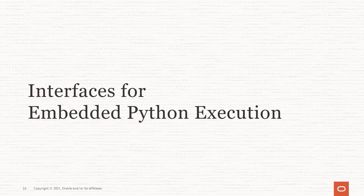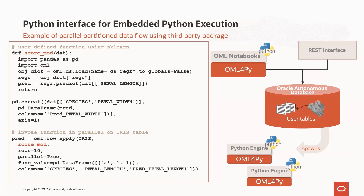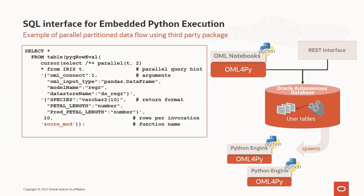Here in the Python interface, we're using row apply to score a model on the iris table. Model mod was created in Python, saved to data store dsmod, and now we're loading the model in the scoring function score_mod and scoring it on the iris table 10 rows at a time, returning results in a single table. The equivalent SQL invocation uses PyQRowEval — we run a select statement invoking PyQRowEval on the score_mod function with 10 rows per invocation, passing a parallel query hint for two degrees of parallelism, along with the model store name, desired return format, and function name.